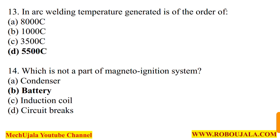In question number 13, they are asking: in arc welding, the temperature generated is of the order of what? As discussed in a previous video on arc welding, the temperature generated in arc welding is 5500 degrees centigrade. So option number D is the correct option.